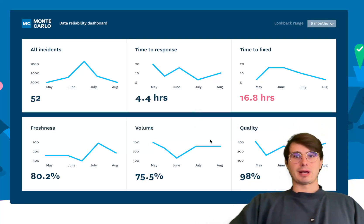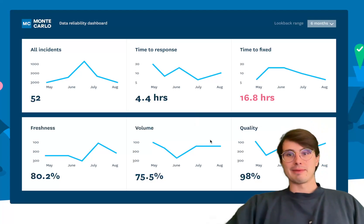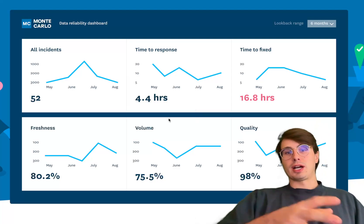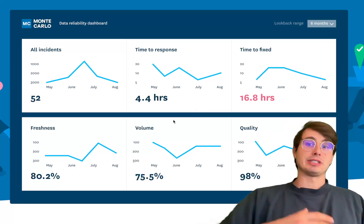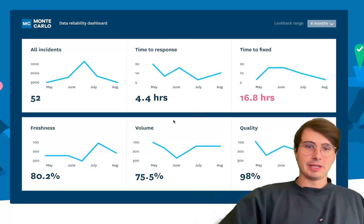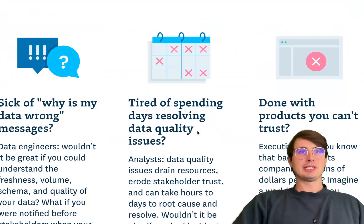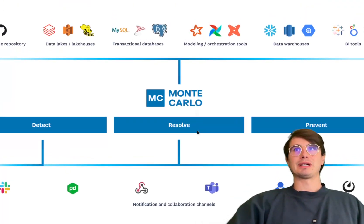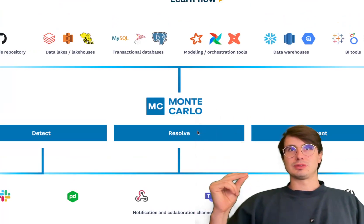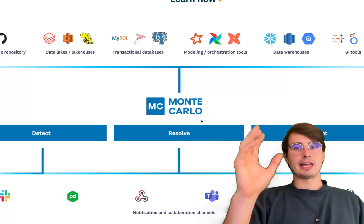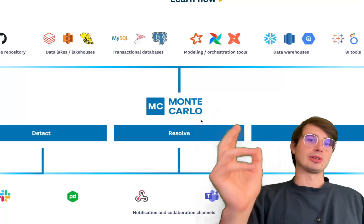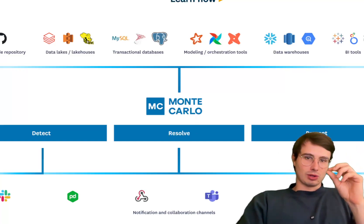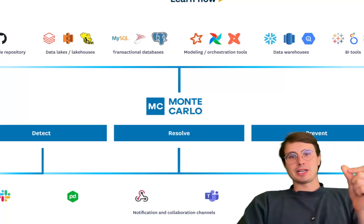Unlike traditional data lineage tools, Monte Carlo's lineage is more tightly integrated with data reliability and quality monitoring — you can see that in the data reliability dashboard it has. It automatically maps data dependencies across cloud warehouses, ETL tools, and BI platforms, and allows data engineers to identify anomalies and ensure the correctness of their data. Monte Carlo really excels at providing real-time lineage updates, particularly valuable in fast-moving organizations, because it gives you a constantly live view of exactly how your lineage looks, with alerting you can layer on top without needing to do any refreshing or waiting for a daily update. It's all focused on real-time, fast-moving pipelines.